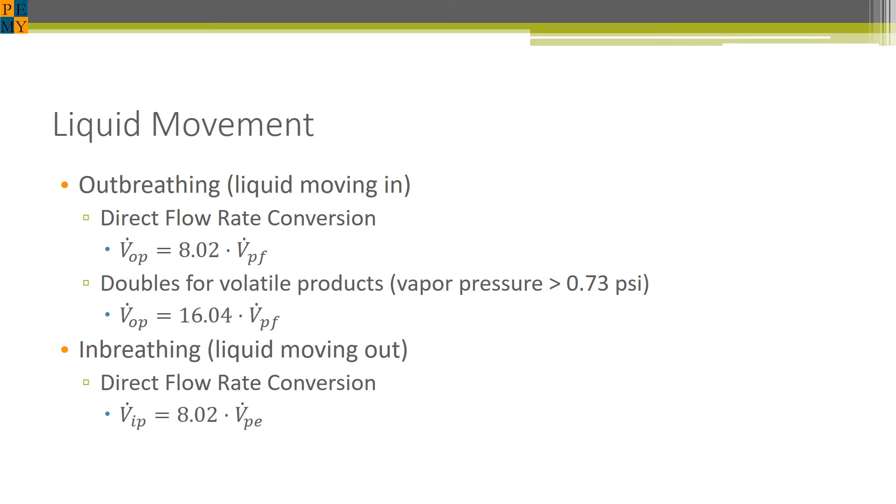However, for volatile products, which are defined as products with a vapor pressure greater than 0.73 PSI, this can actually generate an additional amount of vapors. So this flow rate is actually doubled. However, it is still just a straight flow rate conversion. For inbreathing, this does not happen. When liquid is getting pumped out of the tank, there's not that extra vapor generation inside the tank. So once again, it's just a one-to-one ratio with that 8.02 unit conversion factor.